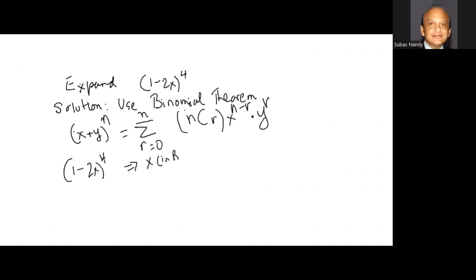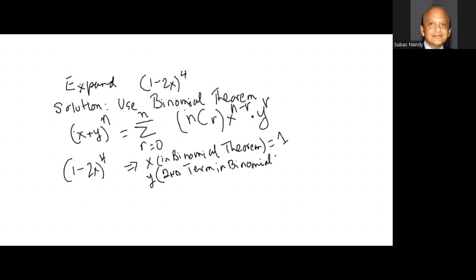The first term x is equal to 1, and y, the second term in the binomial, is equal to minus 2x. And what is my n? The exponent is 4.